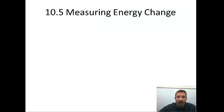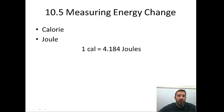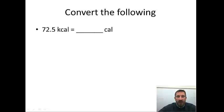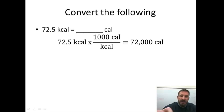So let's look at some measuring energy change. We're going to use a calorie and a joule. A calorie is equal to 4.184 joules. A couple other conversions we'll need to know. There's a thousand joules in a kilojoule. There's also a thousand calories in a kilocalorie. Let's see if we can do a couple conversions. Let's first convert 72.5 kilocalories to calories. You have one kilocalorie over a thousand calories. Your kilocalories cancel. And you end up with 72,000 calories.